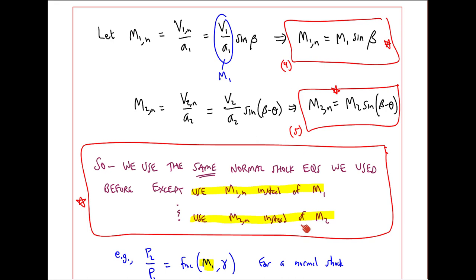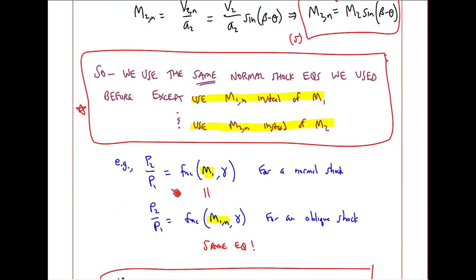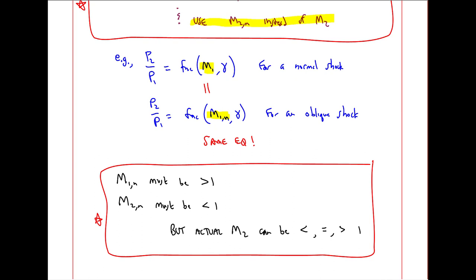For example, we had an expression for P2 over P1 as a function of M1 and gamma for a normal shock. Well, for an oblique shock, we can use the identical equation, except use M1N instead of M1. I'll close with this comment.